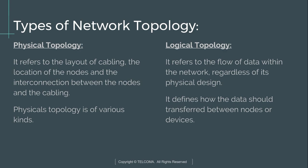There are two types of network topology: physical topology and logical topology. Physical topology refers to the layout of cabling, the location of nodes, and the interconnections between nodes and cables — it refers to the physical design of the network. Logical topology refers to the flow of data within the network regardless of its physical design, defining how data is transferred between nodes or devices.